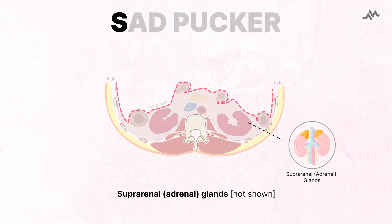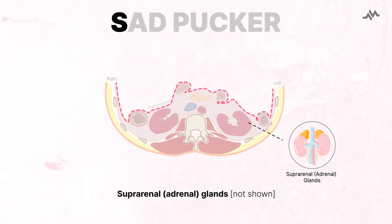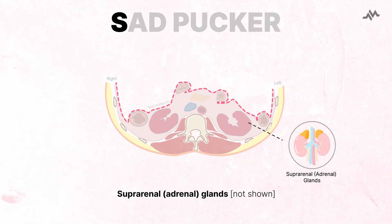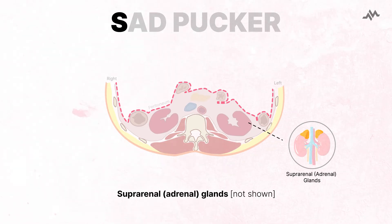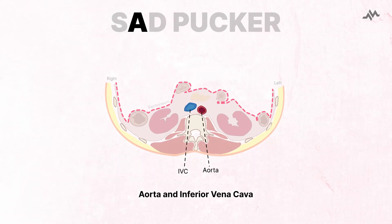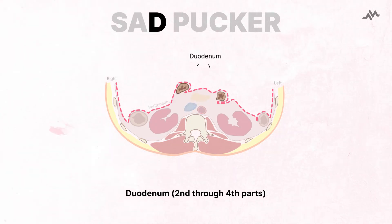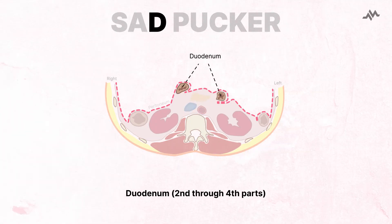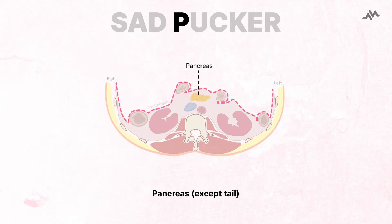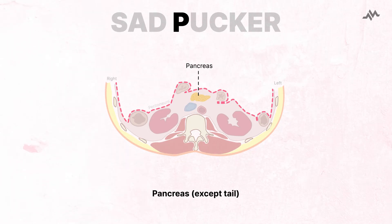S stands for suprarenal glands, also known as the adrenal glands — not visible in this diagram, but located just above both kidneys. A stands for aorta and inferior vena cava. D stands for the second and fourth parts of the duodenum. P stands for the pancreas, except for the tail portion of this organ.